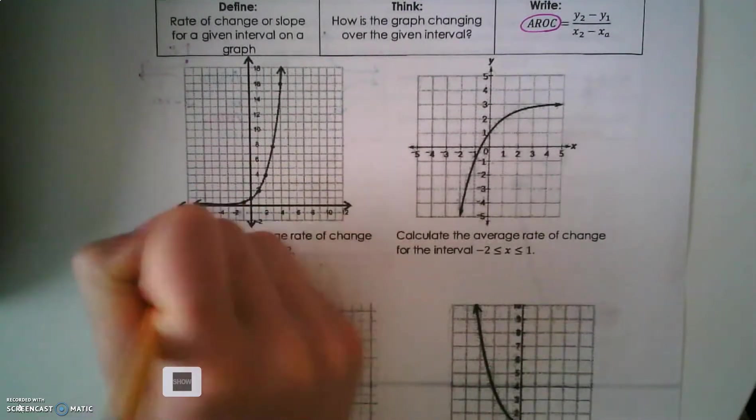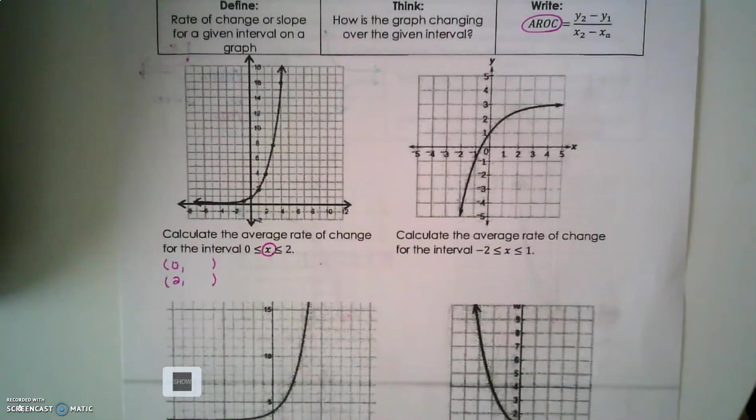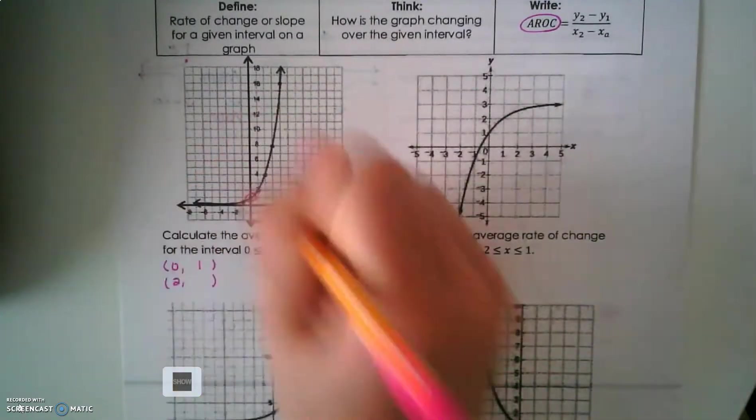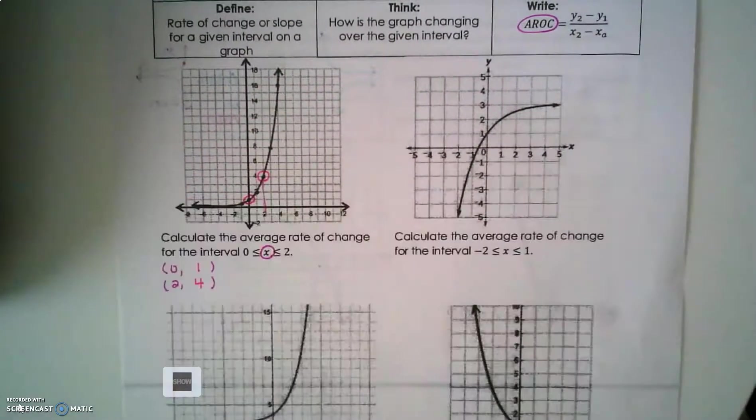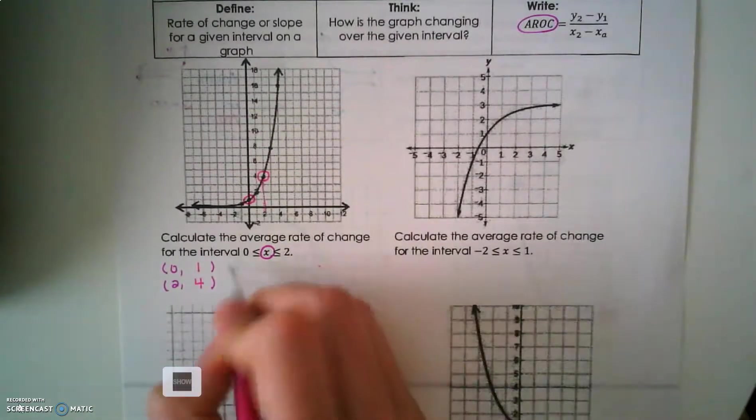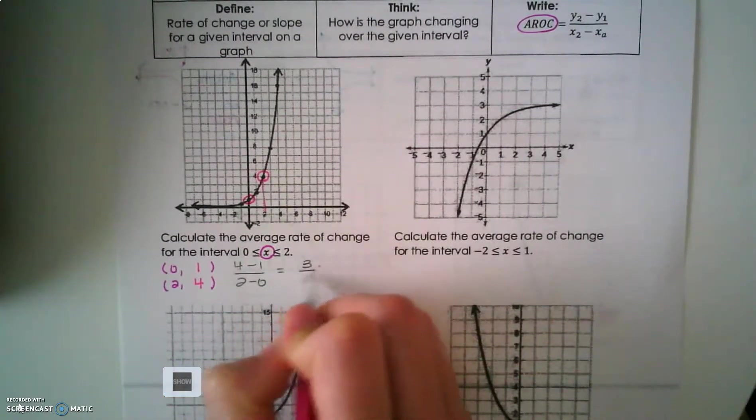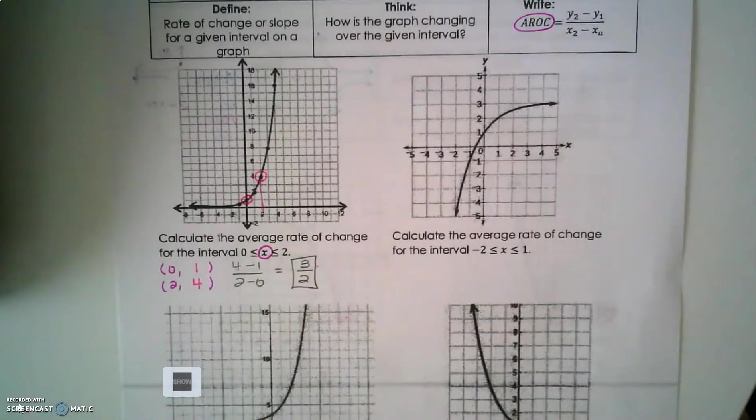So you have an ordered pair of 0 and an ordered pair of 2. Looking at our graph, I'm going to go where x equals 0. I'm going to go where x equals 2 and find those y values. Once I've found those y values, I'm going to say 4 minus 1 all over 2 minus 0. That's 3 over 2. That's our rate of change, and you can leave it in fraction form.